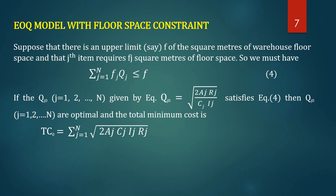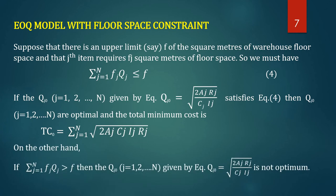If the unconstrained solution Qj0 = sqrt(2·Aj·Rj / (Cj·Ij)) satisfies the floor space constraint, then Qj0 is the optimal procurement quantity and the total minimum cost is TC0 = sigma from j=1 to N of sqrt(2·Aj·Cj·Ij·Rj). On the other hand, if the total space consumed by Qj0 units exceeds the available floor space, then Qj0 is not optimum.